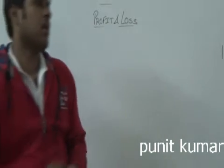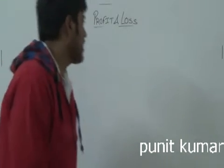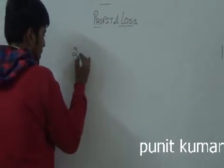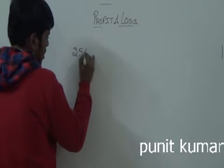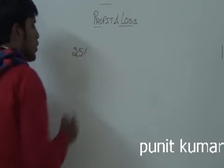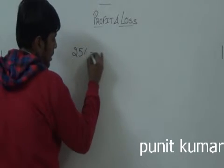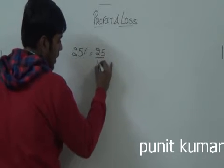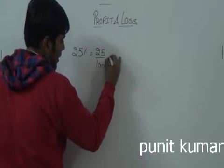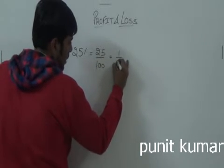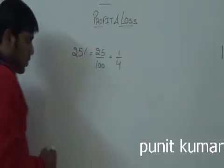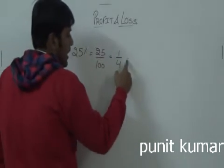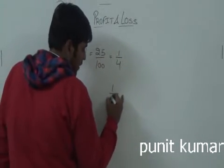How does this method work? No formula needed. For example, if 25% is given, this method will convert it to a ratio. 25 divided by 100 is equal to 1 by 4. So 25% will be interpreted as the ratio 1 by 4.